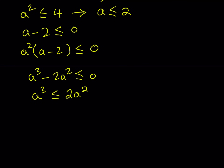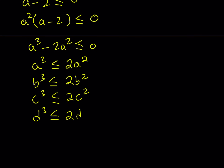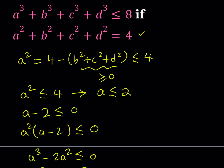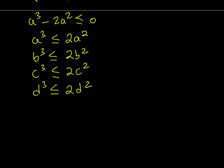We now know the relationship between the cubes and the squares. Since this is true for any of these variables — a, b, c, d — the same reasoning applies to all of them. So b cubed is less than or equal to 2b squared, c cubed is less than or equal to 2c squared, and d cubed is less than or equal to 2d squared. We're trying to prove that the sum of the cubes is less than or equal to 8, and we're going to get this just by adding these inequalities.